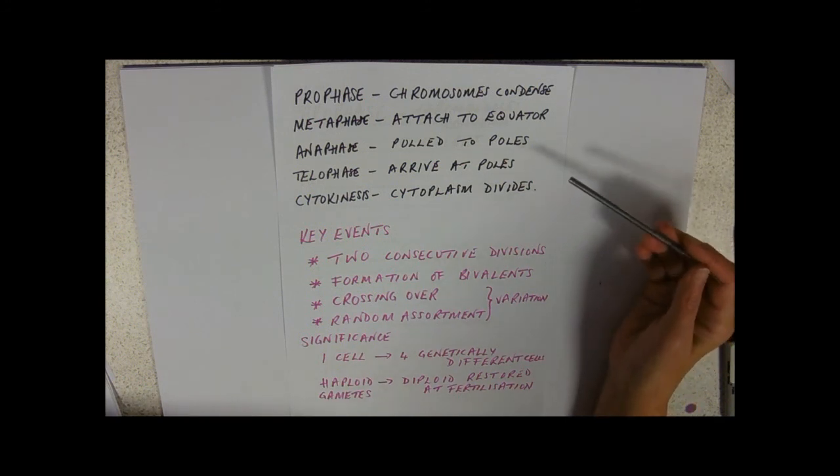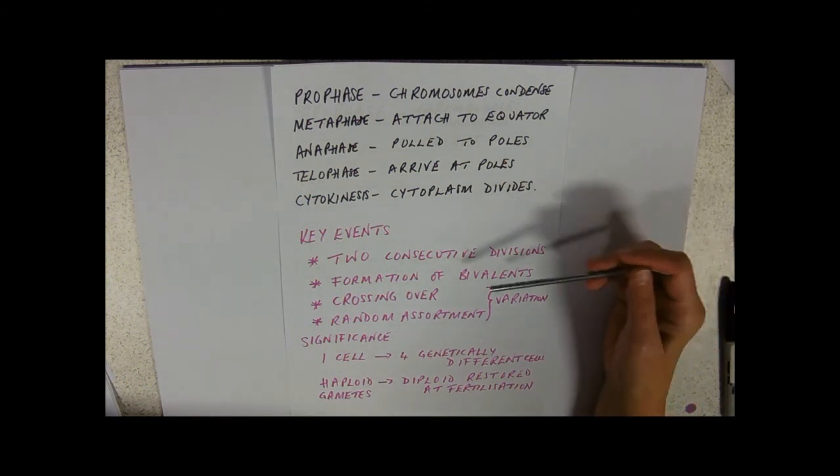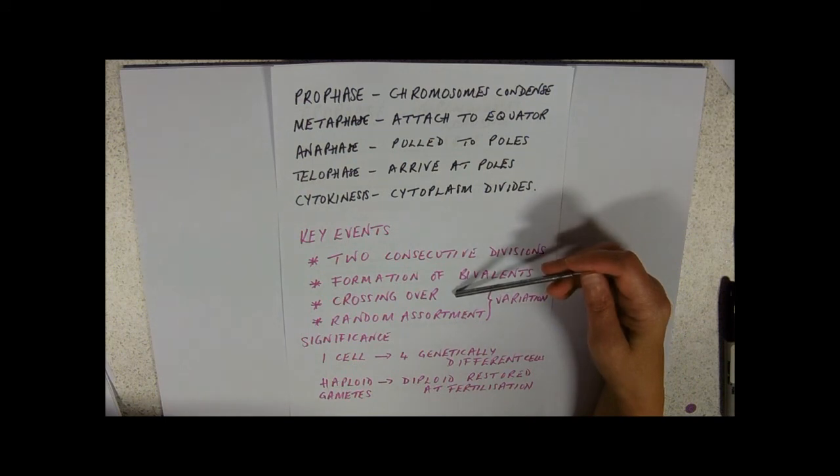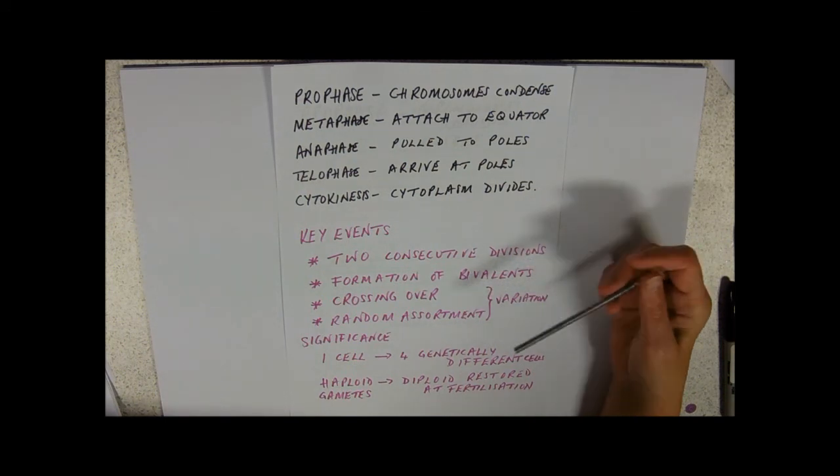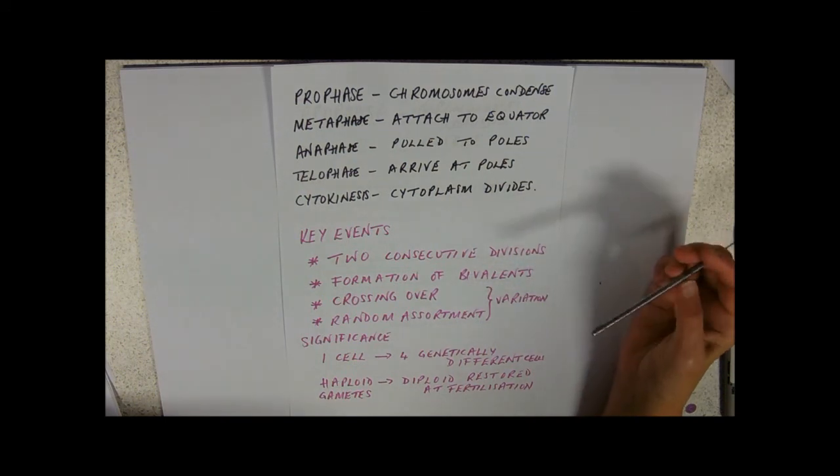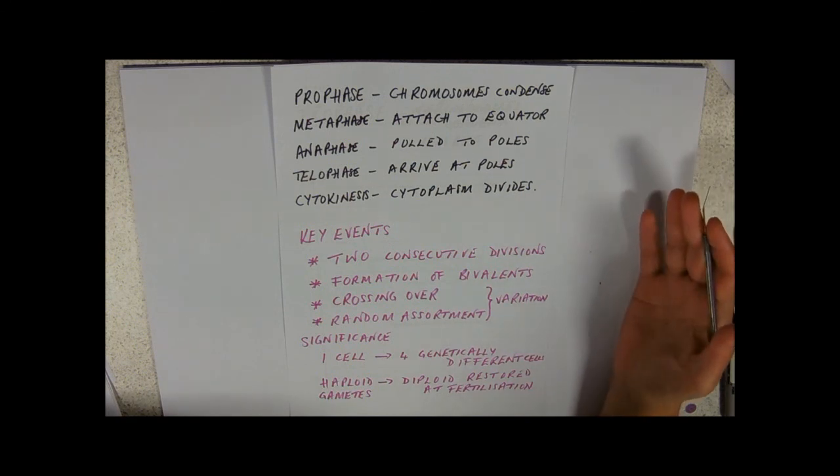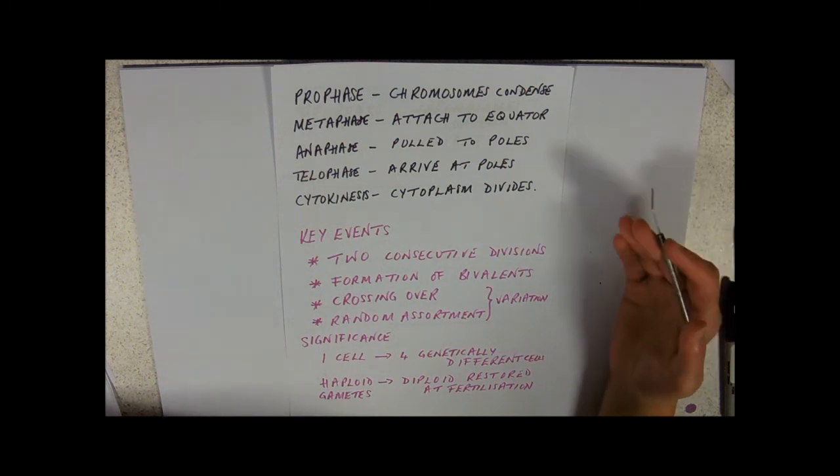And you'll often hear meiosis referred to as a reduction division, because we're reducing the number of chromosomes by half. Also, in prophase, a significant event, crossing over. So, we're actually going to swap some of the information, some of that genetic information, between the homologous pairs.